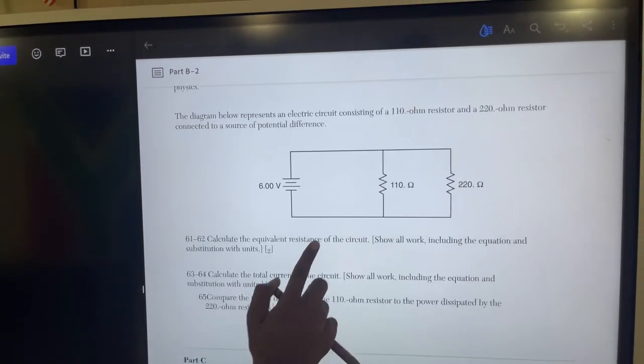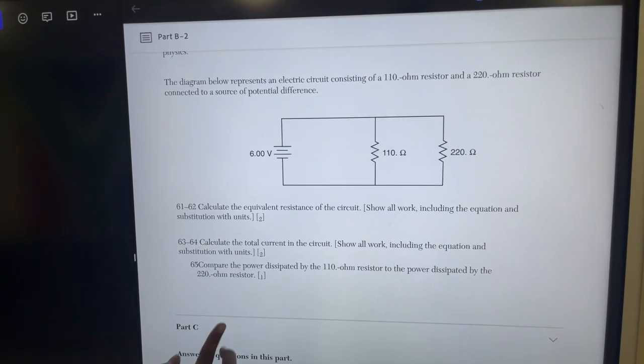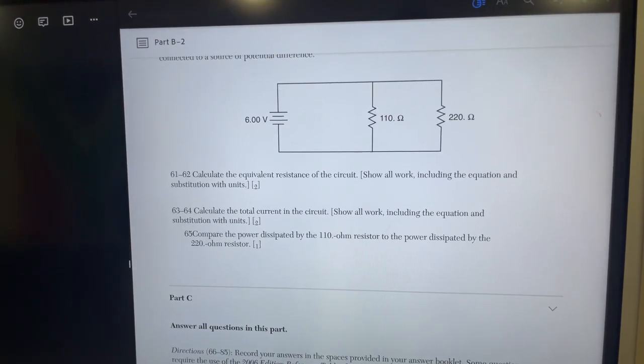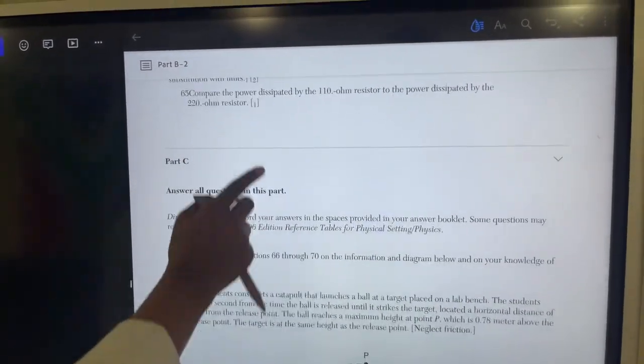This is a circuit. Calculate the equivalent resistance. Calculate the total current. Compare the power dissipated by the 110 ohm resistor to the power dissipated by the 220 ohm resistor. That's it.